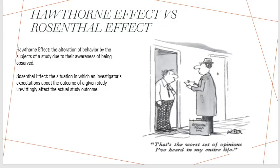Now let's talk about the Hawthorne effect and the Rosenthal effect. The Hawthorne effect is when the behaviors of subjects (participants) are changed because of their awareness of being observed. When participants of a research study know they're being watched, they start behaving differently. For example, when I watch them wash my car, they're on their best behavior because they see me watching them, so I get better results.